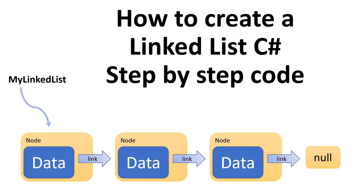Before we create that, we need to understand what a linked list is. A linked list is a data structure that is composed by nodes. Each node has two pieces of information: one is the data, and the data can be whatever you want it to be. The other piece of information is the link, and this link points to the next node. The next node has the same characteristics — data and then the link to the next node.